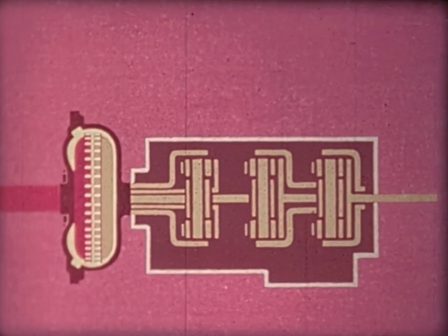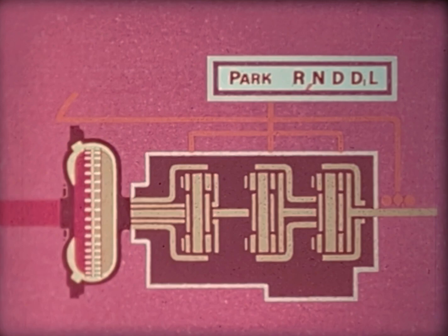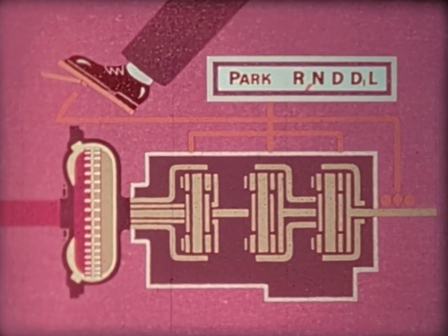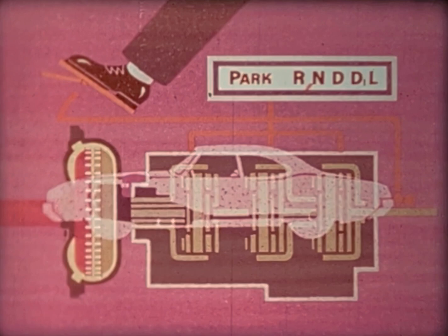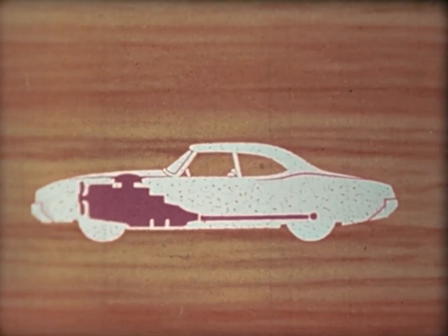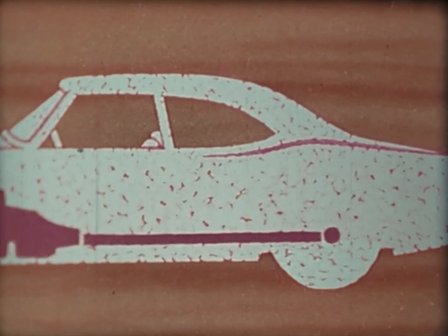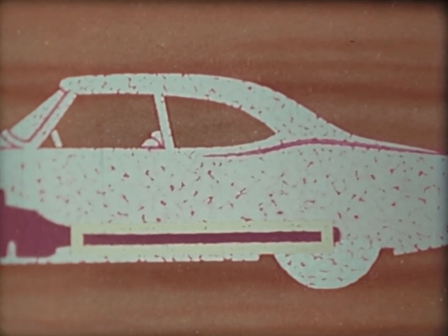The operation of an automatic transmission depends on the setting of the selector lever, the position of the accelerator pedal, and the speed of the car. Now let's have a look at the drive shaft. If the car had no springs, we could simply put the drive shaft in place connected directly to the transmission and the rear axle.